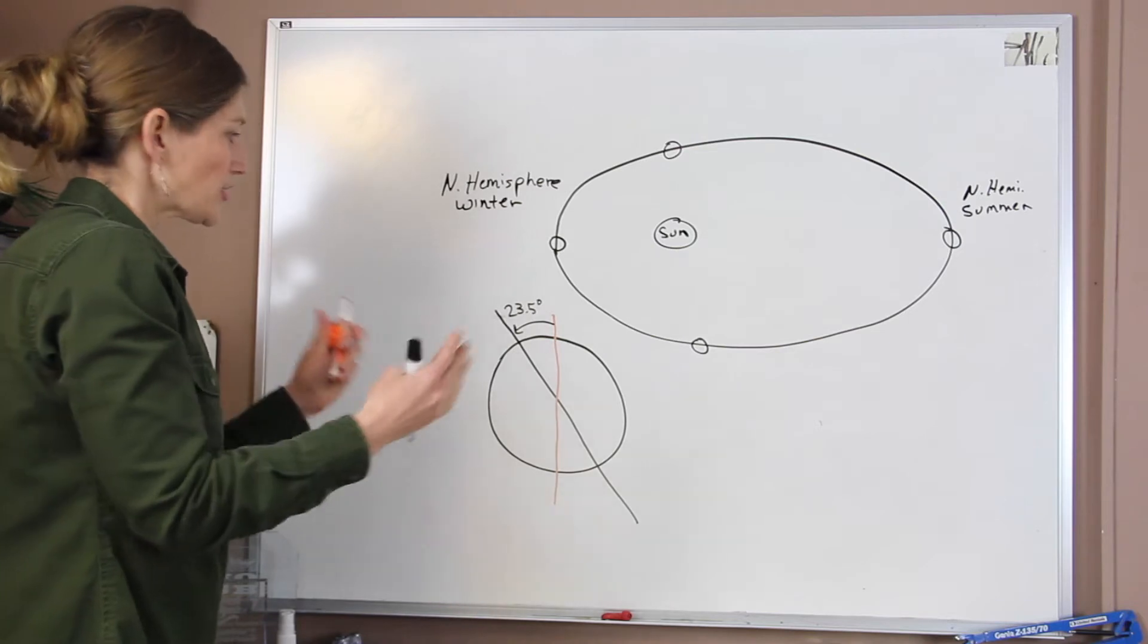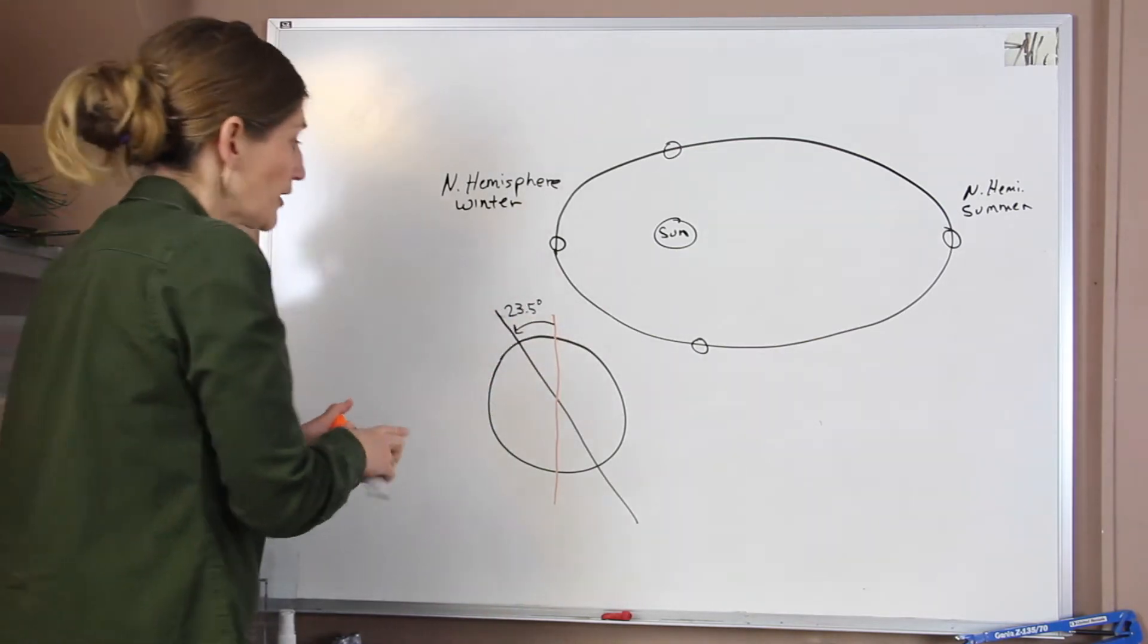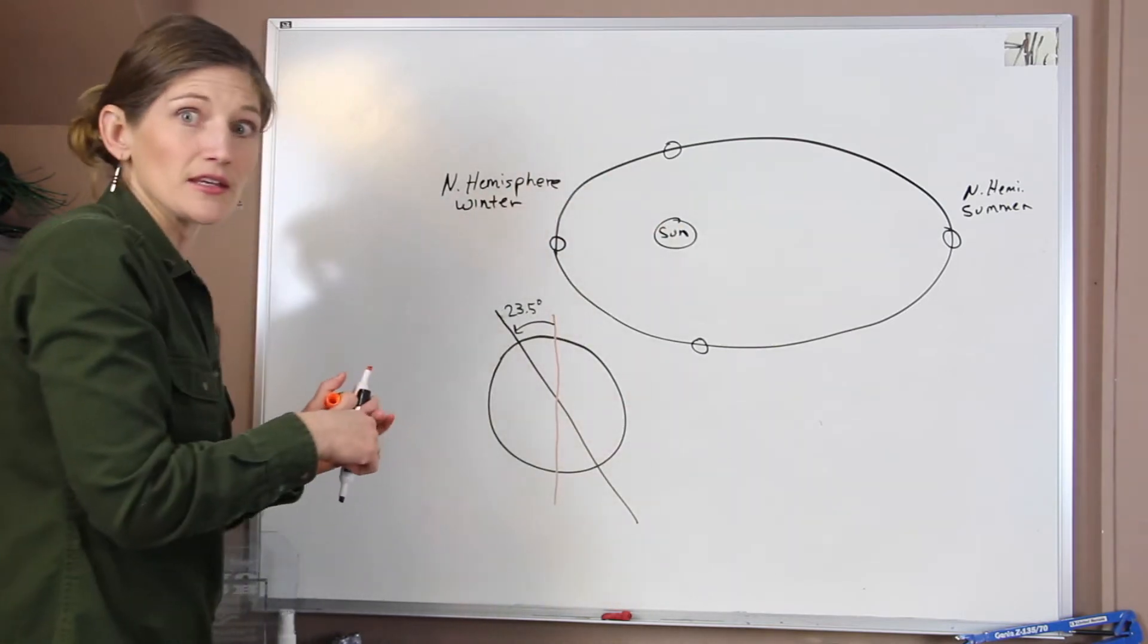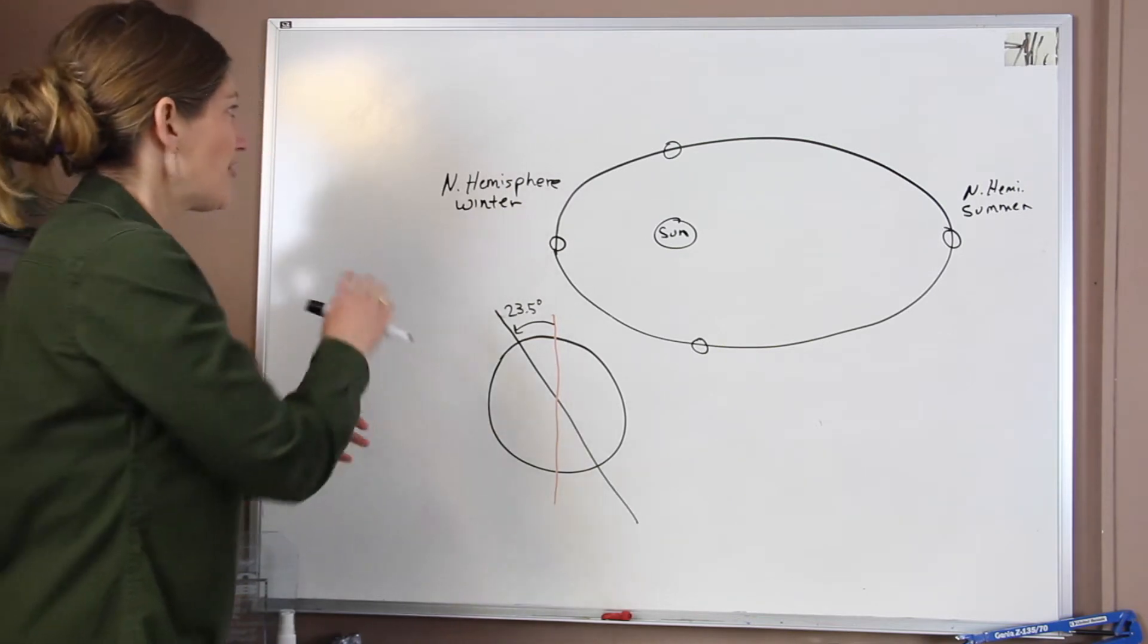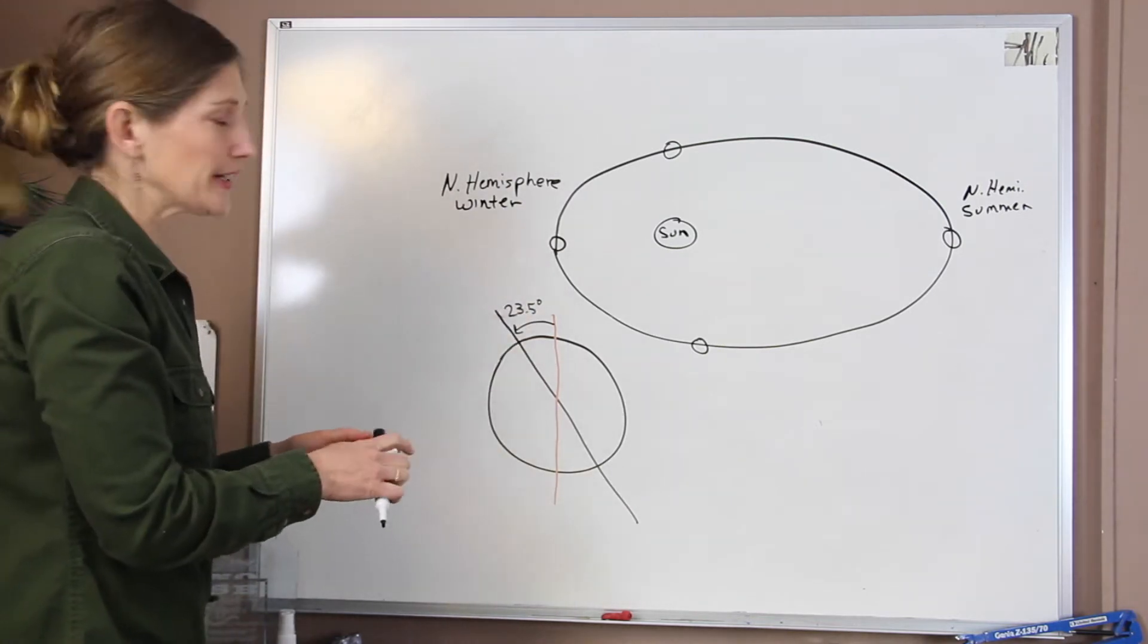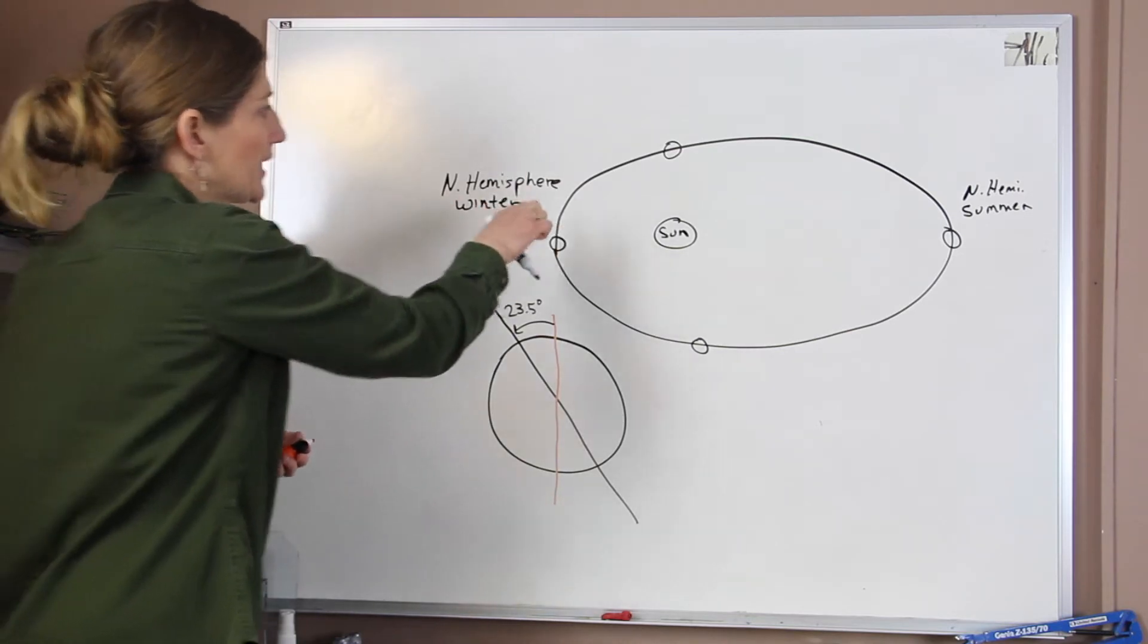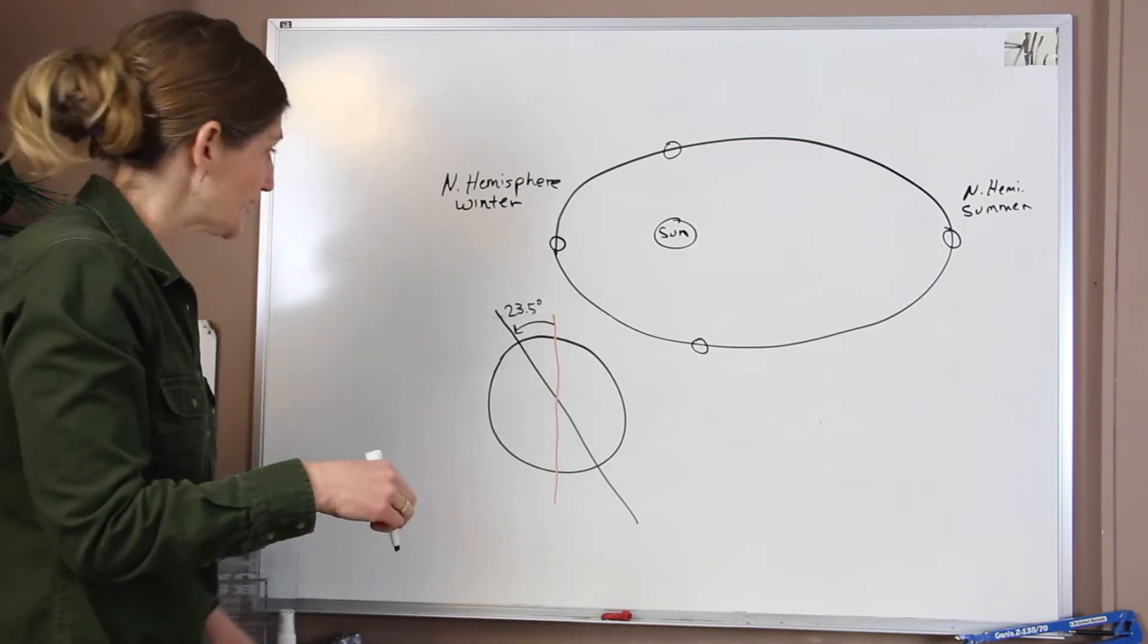And that tilt changes the amount of incoming solar radiation that hits the surface of the Earth at different times of the year. And it's those changes in the incoming solar radiation that gives us our seasonal variations on Earth. So we're going to look at what's happening in these four different positions to understand what's going on with our seasons.